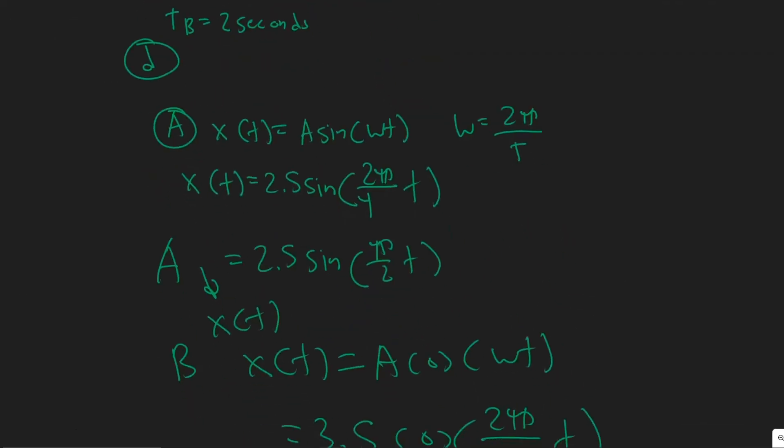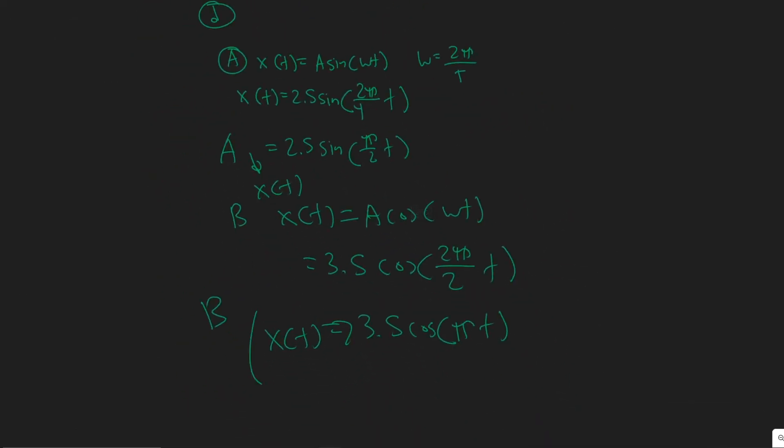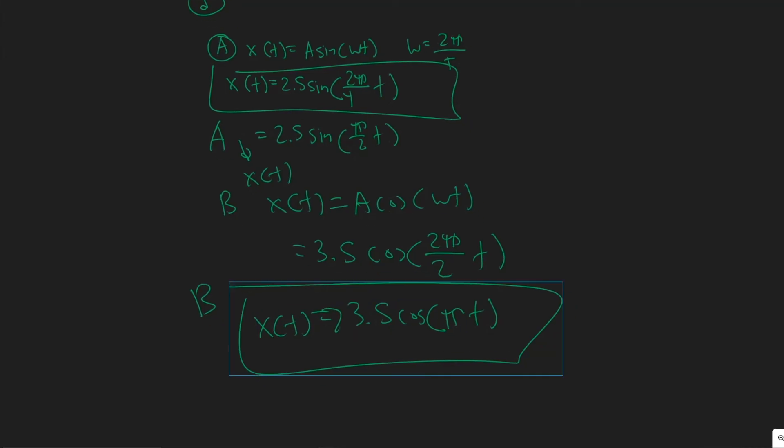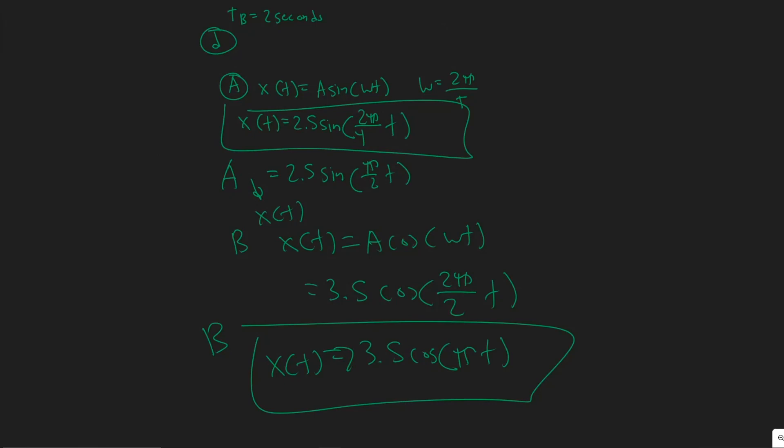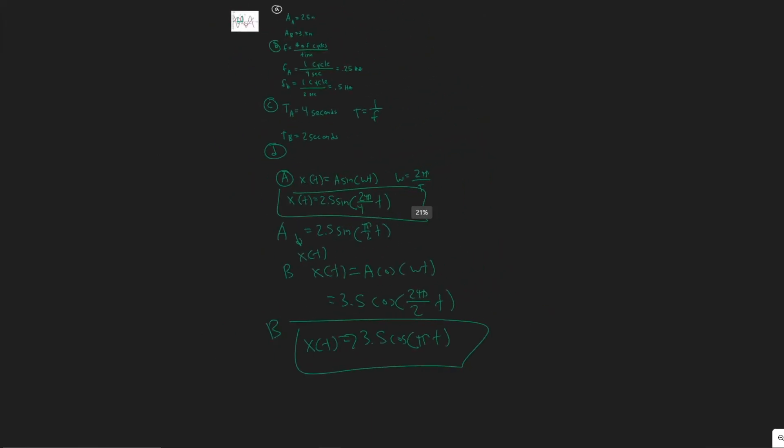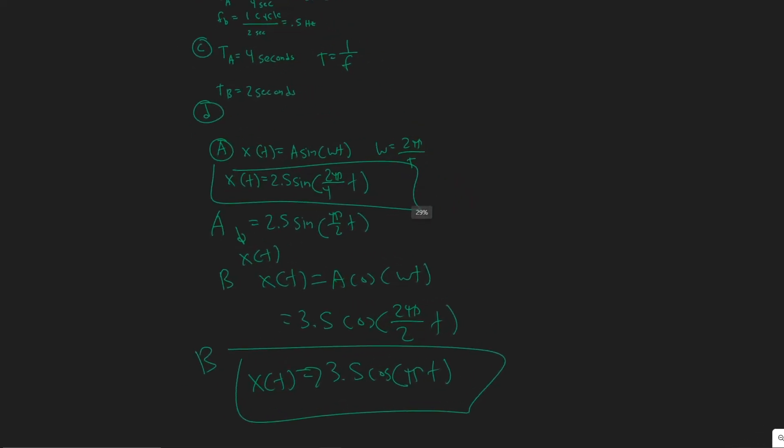And then D, these are both your functions, right? So they wanted you to write the equations for both A and B. So these are your equations. So for B, 3.5 cosine of π t. And then for A, it's 2.5 sine of π over 2 t. But yeah, so these are going to go ahead and be your answers. And hopefully you found this video useful.